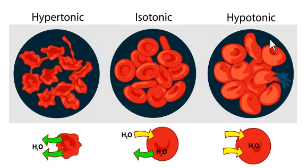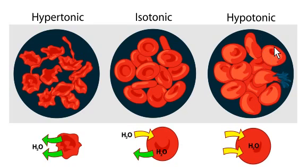These cells, which look like RBCs to me by the look of it — the picture has been copied from wikipedia.org — are surrounded by a hypertonic solution which has got a lower concentration of solutes as compared to the cell itself.